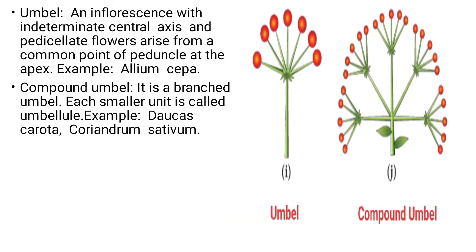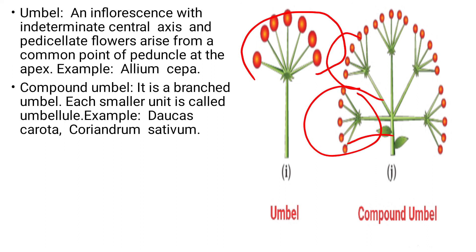Umbel: the central axis is shortened and from it a group of flowers are arranged, arising from the same point. Example: Allium cepa (onion). In compound umbel, the umbel itself is branched. Examples: Daucus carota (carrot) and Coriandrum sativum (coriander).